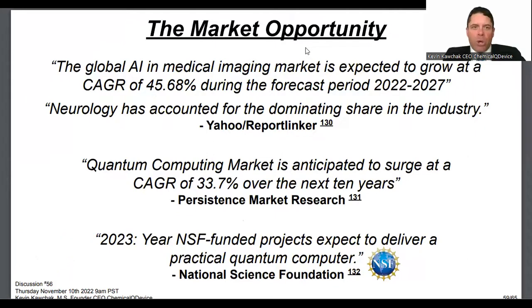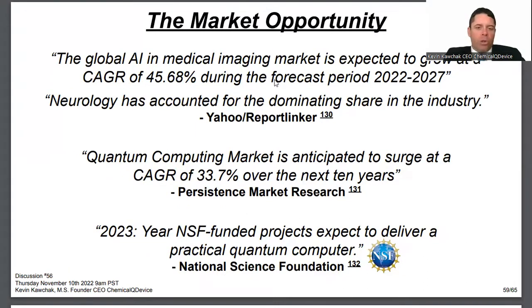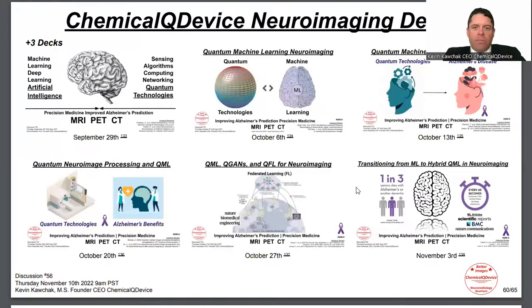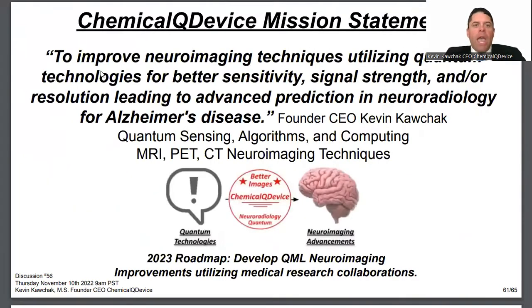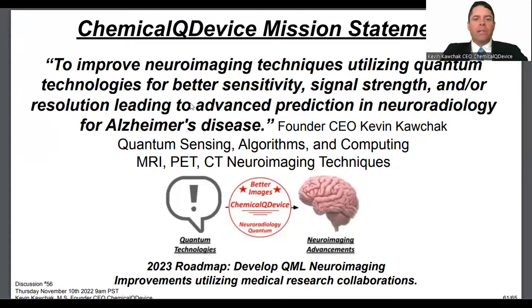The market opportunity is strong: medical imaging marketing at about 45% growth, quantum computing market at 33% compound annual growth rate, and the NSF practical quantum computer coming next year. There are nine available decks, and this will be the tenth, specific to neural imaging and QML. The Chemical Q Device mission statement: to improve neuroimaging techniques utilizing quantum technologies for better sensitivity, signal strength, and resolution, leading to advanced prediction in neuroradiology for Alzheimer's disease — including quantum sensing algorithms, computing, and memory — with MRI, PET, and CT techniques.